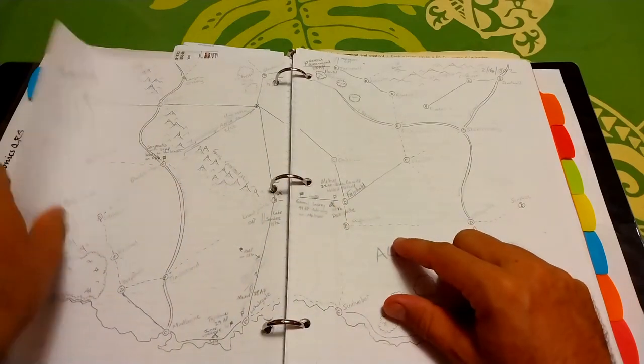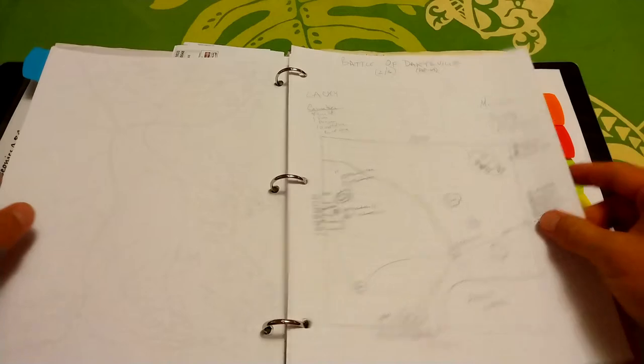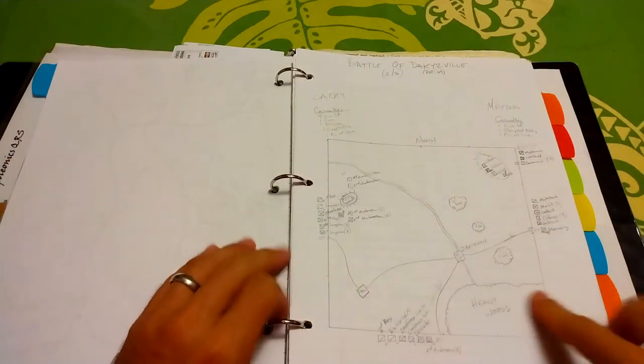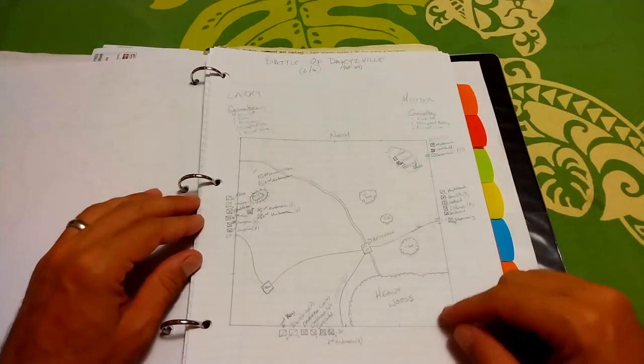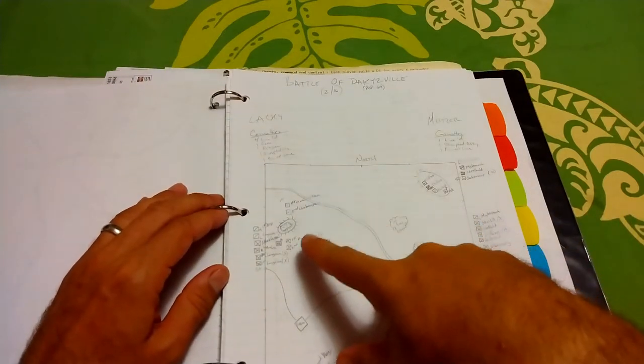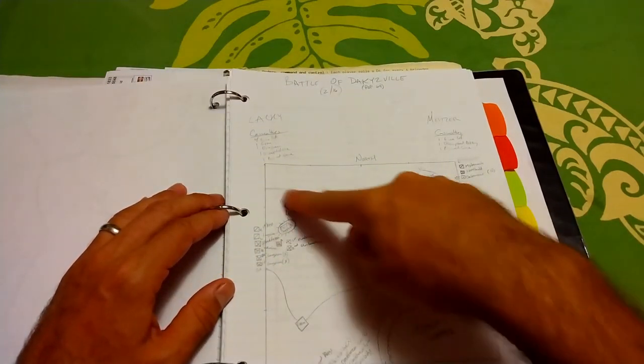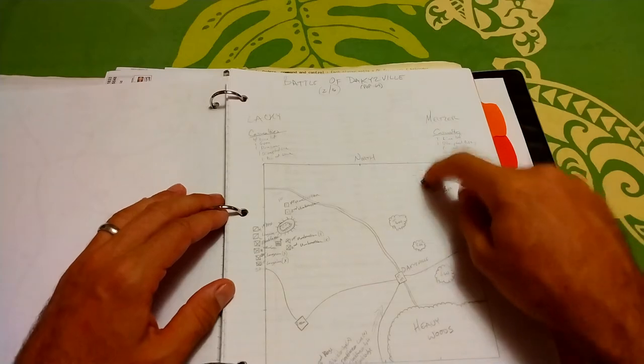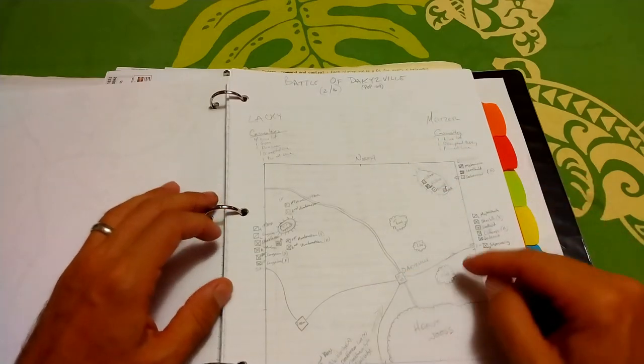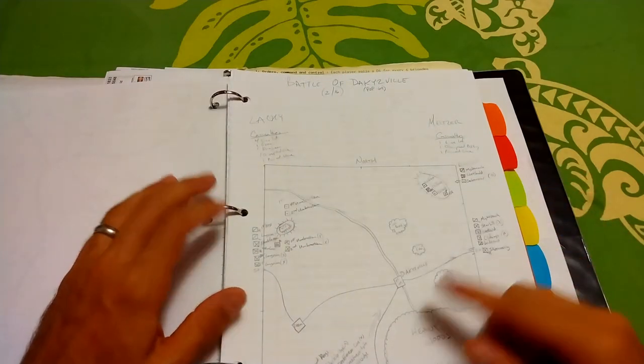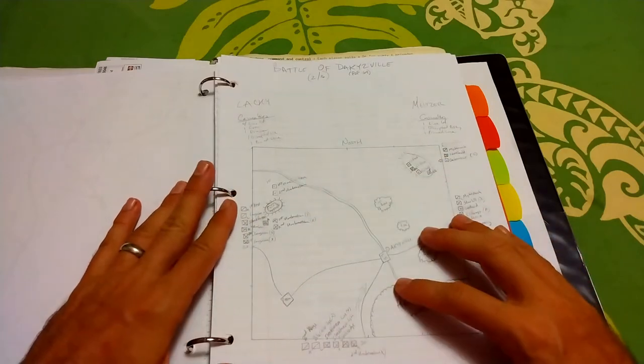But once we got down to a particular battle, we just went back to the purely random. Our generals had very little say over what terrain was present. In this case, the Battle of Dacusville, we had a hill, a couple of roads, a river, heavy woods, another hill up here, and another road. And this river, if I recall correctly, we randomized and it was very difficult to cross.